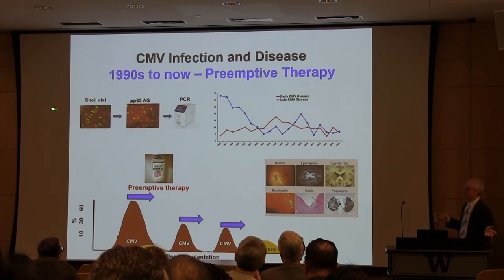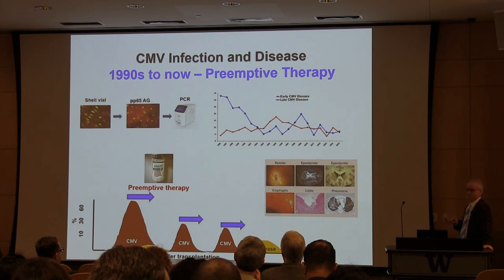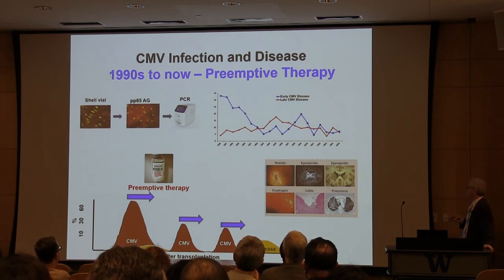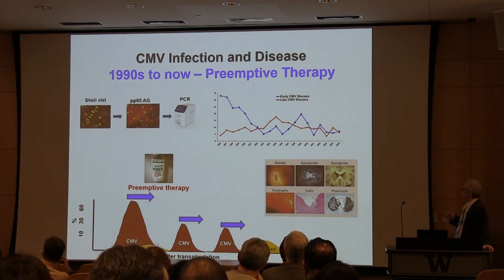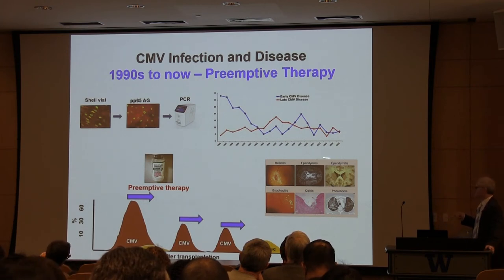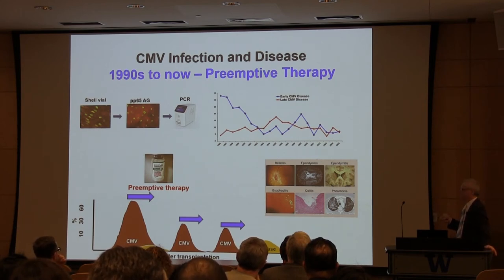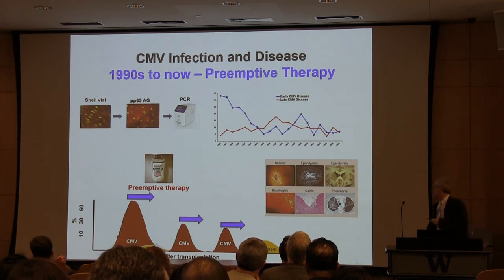First we had the rapid culture assay, then the pp65 antigenemia assay came along. Larry Corey and others in the lab developed a highly sensitive and powerful PCR assay which we have been using for the last 15 years to study the pathogenesis and conduct surveillance. This brought down the CMV disease rate from 35% during the first 100 days down to 5%, though we did see a little increase in late complications and unusual manifestations such as retinitis and encephalitis occasionally, though these are all rare.